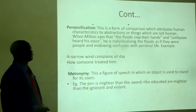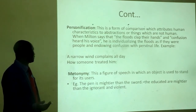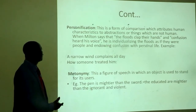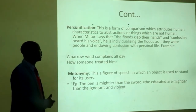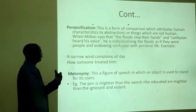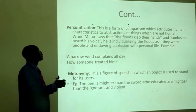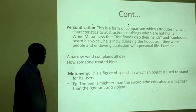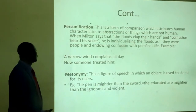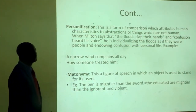Let us look at personification. Personification is a form of comparison which attributes human characteristics to abstractions or things which are not human. When Milton says that the frogs clap their hands and he endows a character with personal life, he is individualizing non-human things as if they were people. Can frogs really clap hands? In literature it is possible — frogs can be assigned human attributes. Another example: 'A narrowweed complains all day how someone treated him' — the plant is assigned the human attribute of complaining. That is a good example of personification.